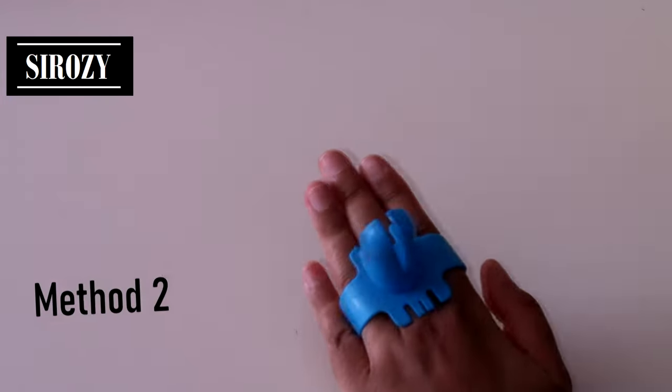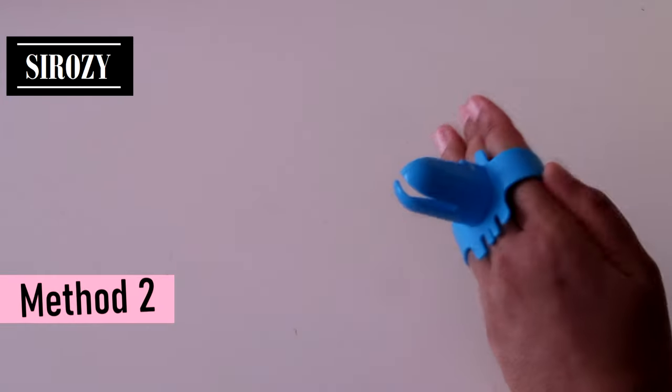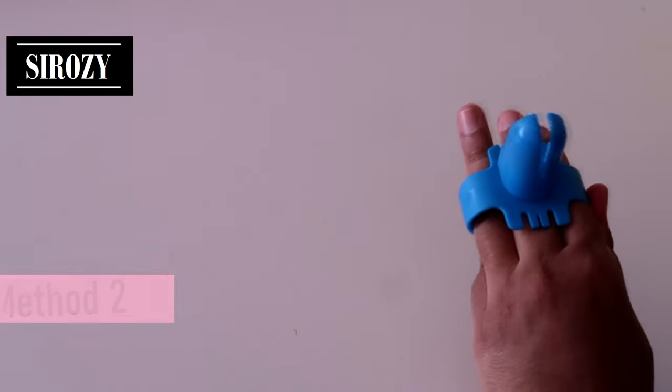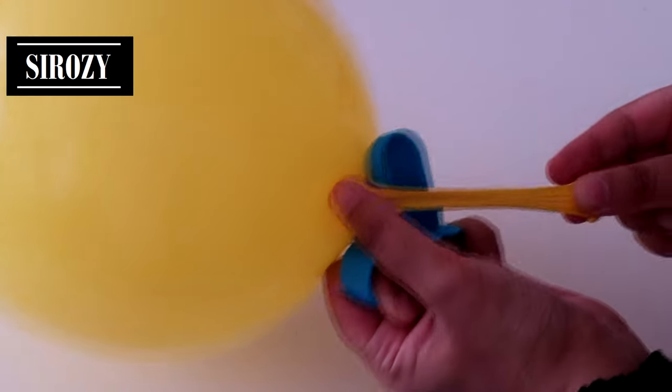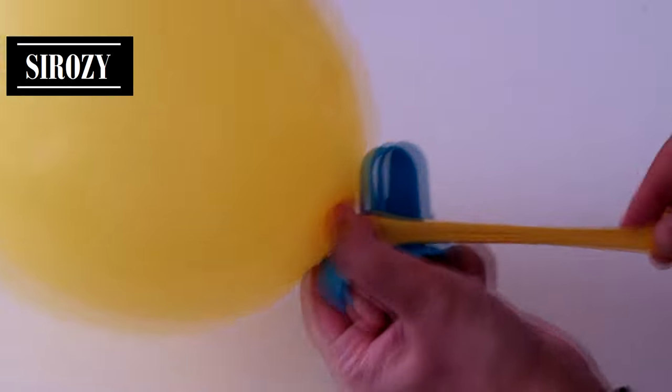That's one way. For the second way, you'll keep the balloon tying tool exactly the same way as we did in the previous on our fingers. We'll take our balloon, we'll go around it like this.